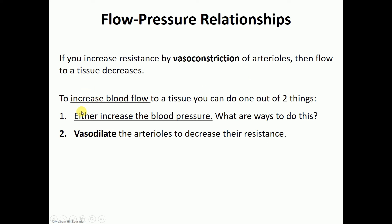Another way to increase blood flow to an organ is to increase blood pressure. The sympathetic nervous system can increase the force of contraction from the ventricles, increase venous return to the heart, which translates into an increase in stroke volume and cardiac output. If you're not familiar with these terms, go back and review those definitions because they are extremely important. These are ways the heart can change blood pressure, while on the arteriolar level we can change flow by dilating or constricting the arterioles.